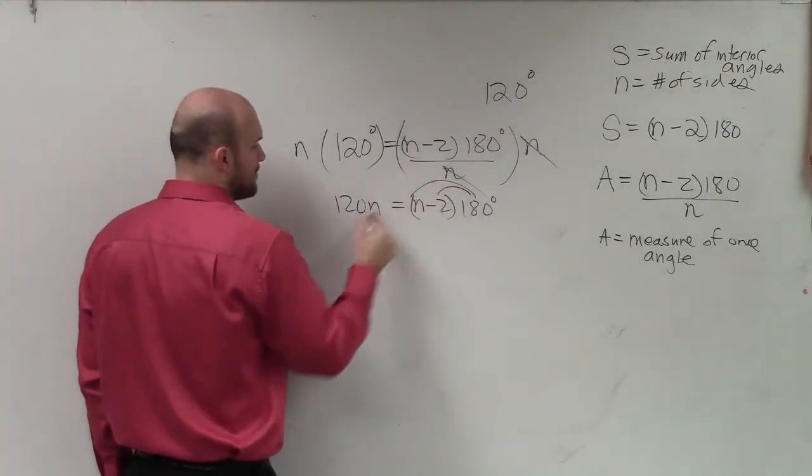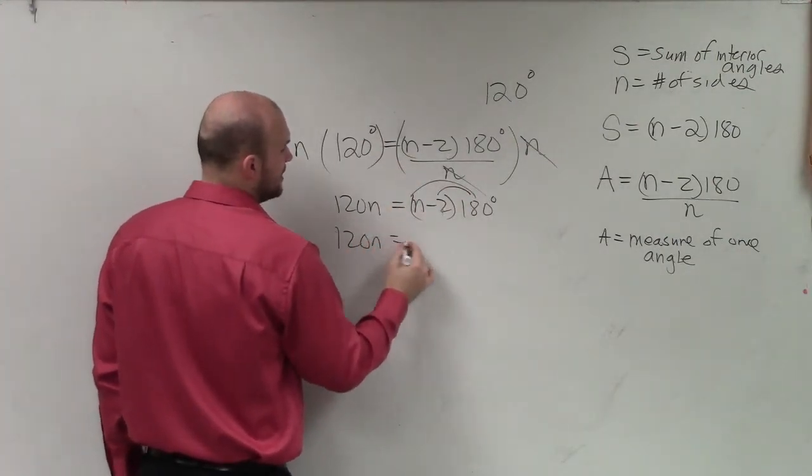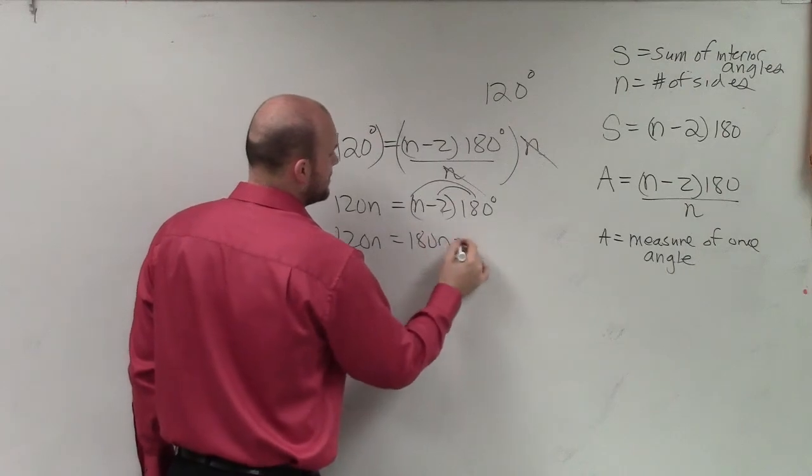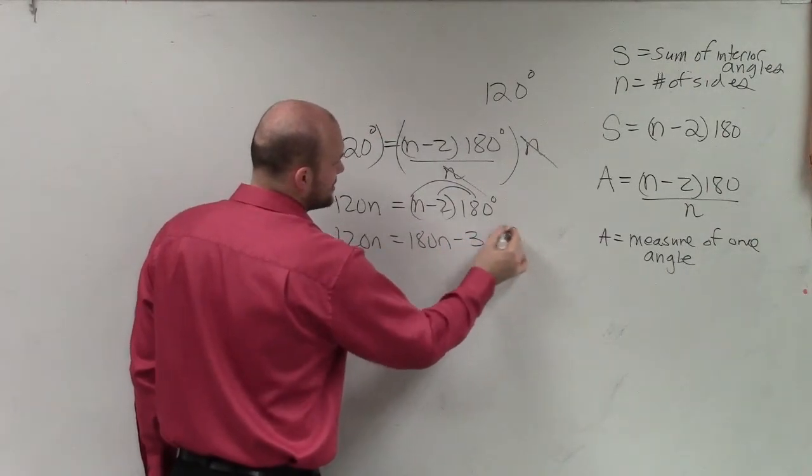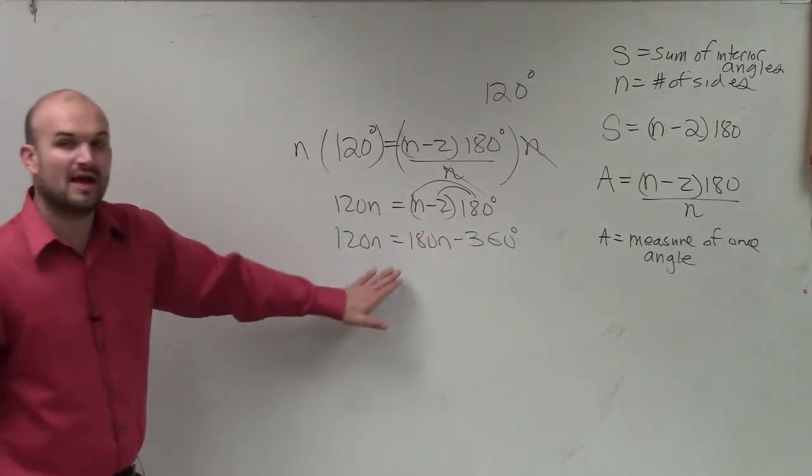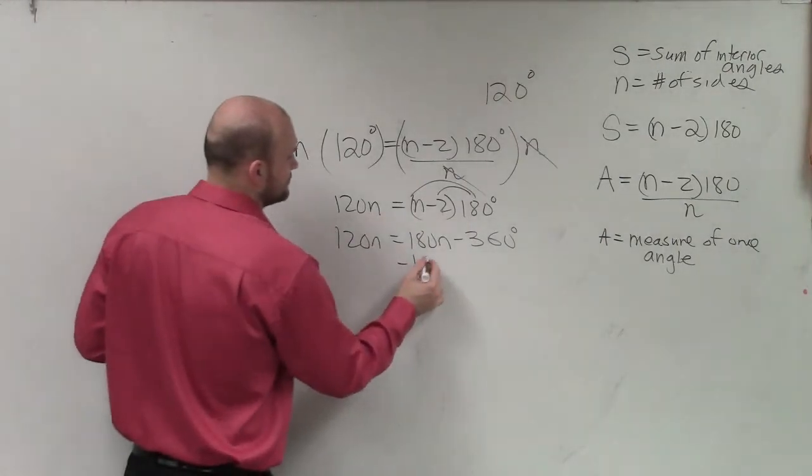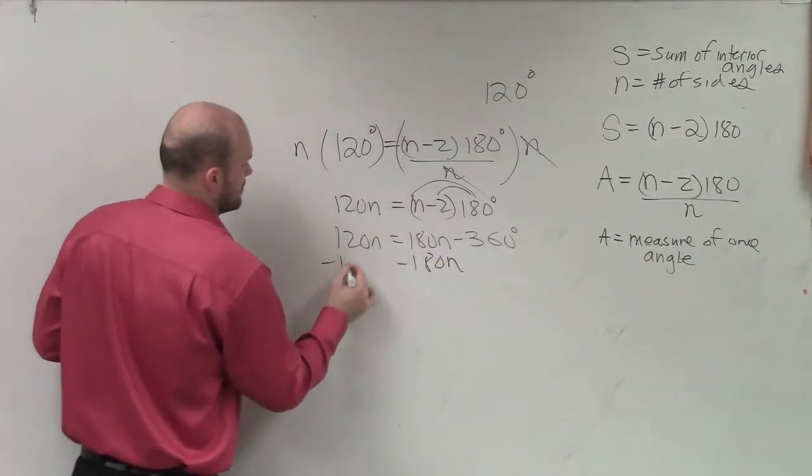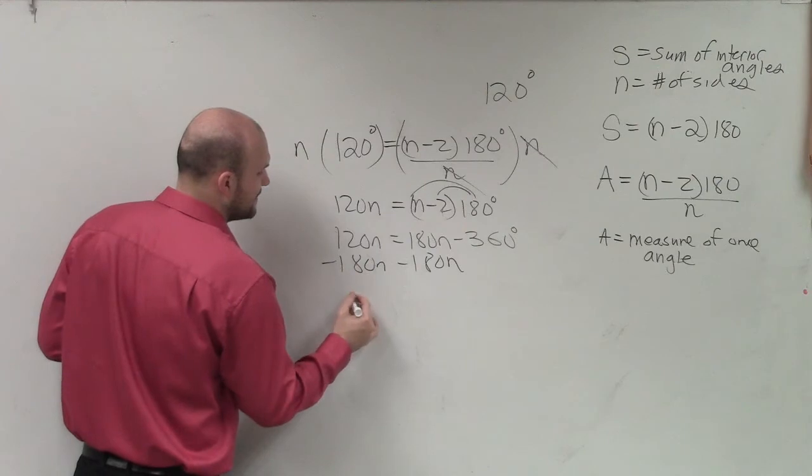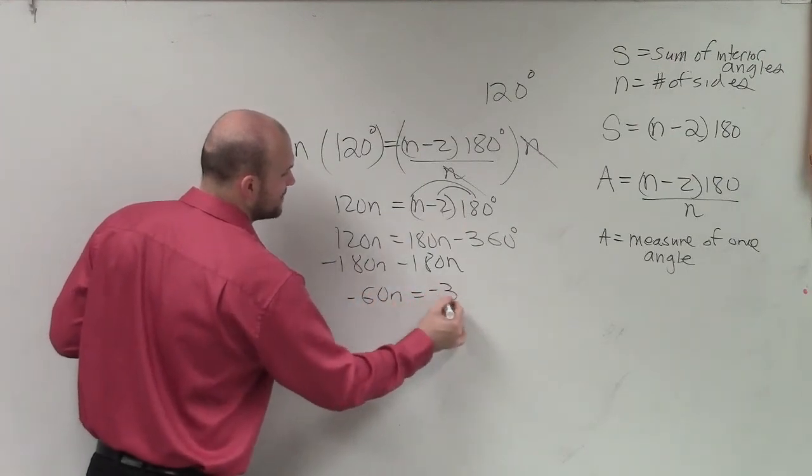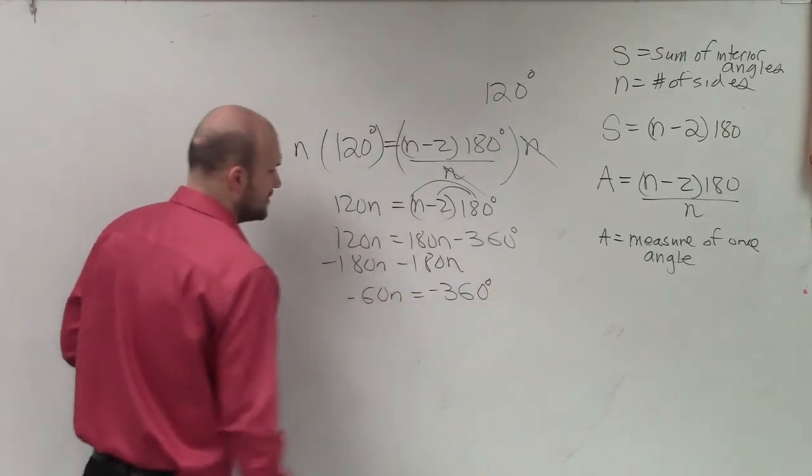Then I apply the distributive property. So I have 120n equals 180n minus 360 degrees. Then I get the n's on the same side.